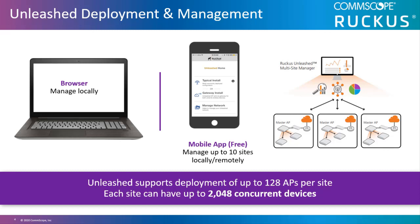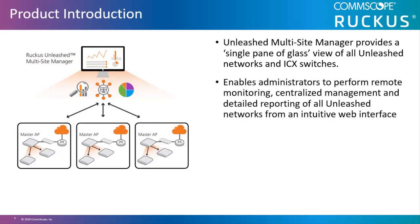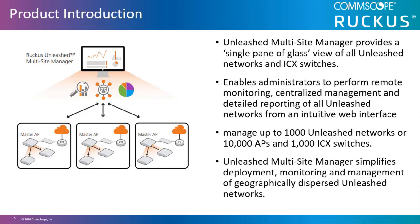But what if you have Unleashed at a site and are looking to expand to multiple sites? That's where our third management option comes into play: the Unleashed Multisite Manager. UMM provides a single pane of glass view of all Unleashed networks and ICX switches, enabling administrators to perform remote monitoring, centralized management, and detailed reporting of all Unleashed networks from an intuitive web interface. You can manage up to 1,000 Unleashed networks or 10,000 APs and 1,000 ICX switches. UMM simplifies deployment, monitoring, and management of geographically dispersed Unleashed networks.